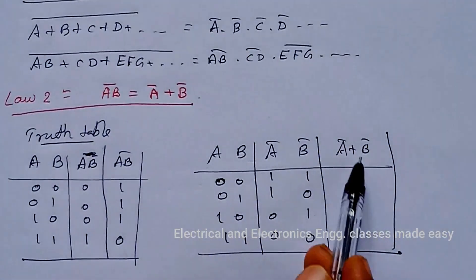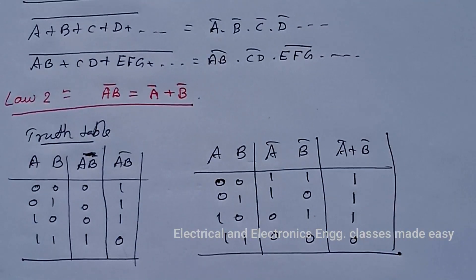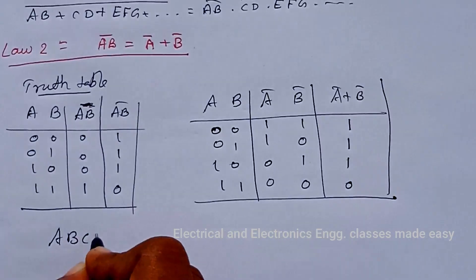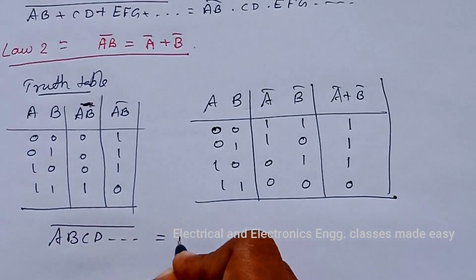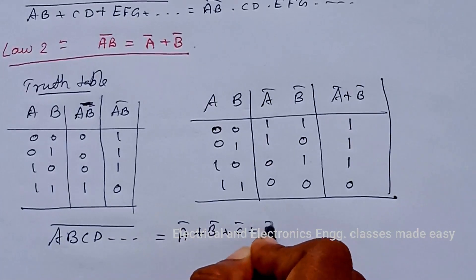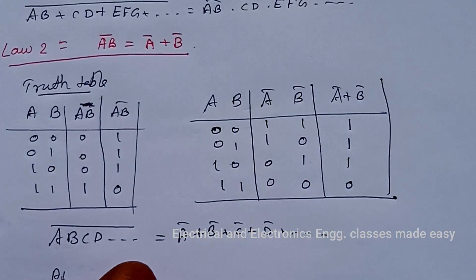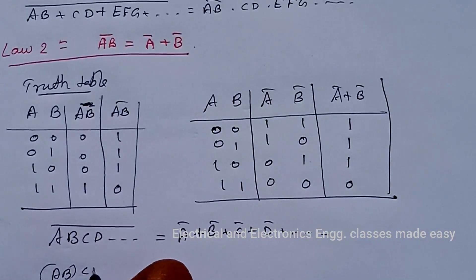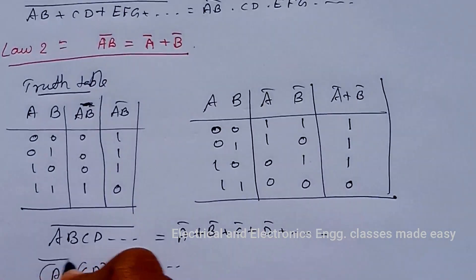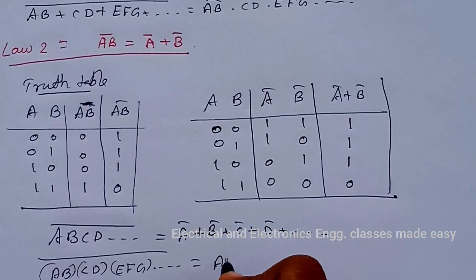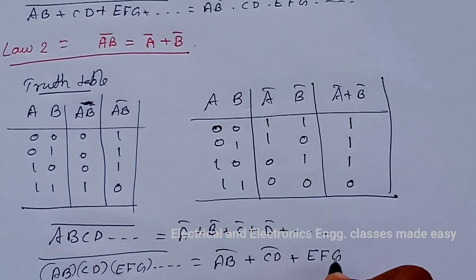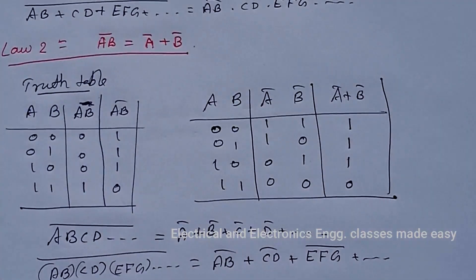Also, A B C D etc., whole bar, is equal to A bar plus B bar plus C bar plus D bar plus etc. And A B into C D into EFG into etc., whole bar, is equal to AB bar plus CD bar plus EFG bar plus etc.